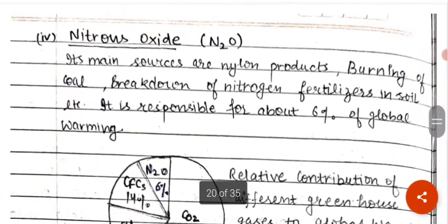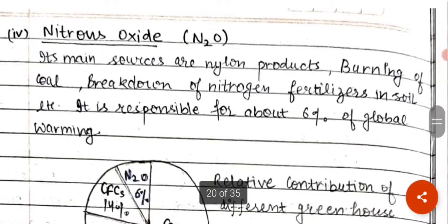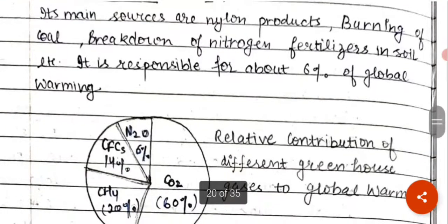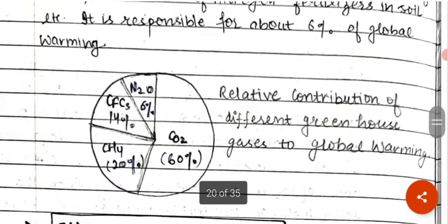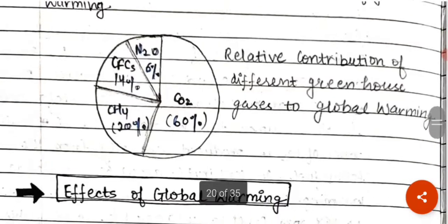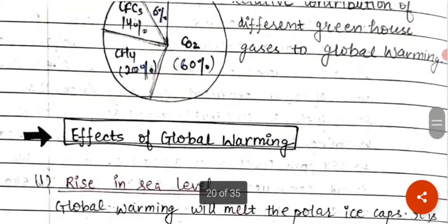Nitrous oxide: the main sources are nylon products, burning of coal, and the breakdown of nitrogen fertilizers in soil. Nitrous oxide contributes 6% to global warming. In summary: CO2 contributes 60%, methane 20%, CFCs 14%, and nitrous oxide 6% to global warming.